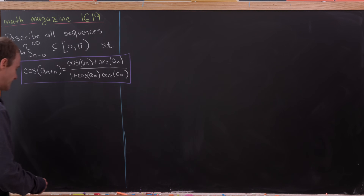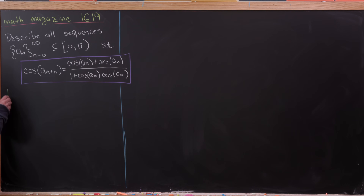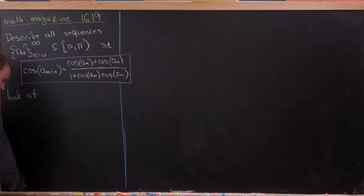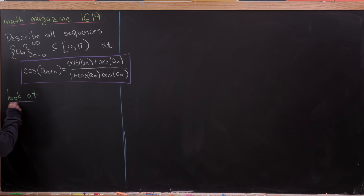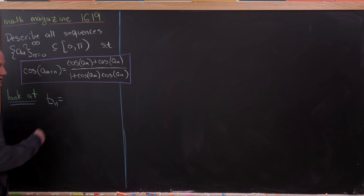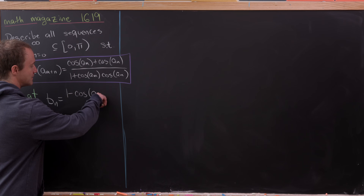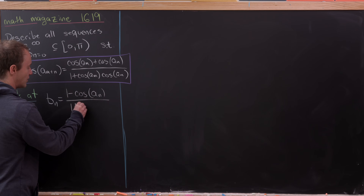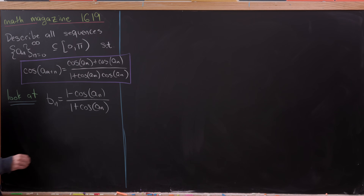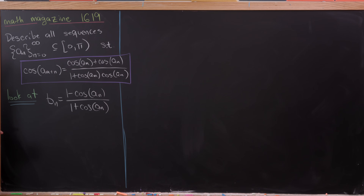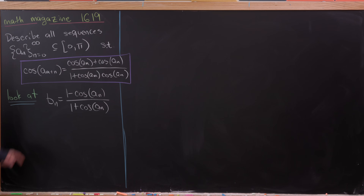The main trick here is to look at what I'll call an accessory sequence. The accessory sequence, b_n, is defined as (1 - cos(a_n)) / (1 + cos(a_n)). The b's are outside of cosine, which is helpful. What we'd like to do is build a similar recursion out of the b sequence.